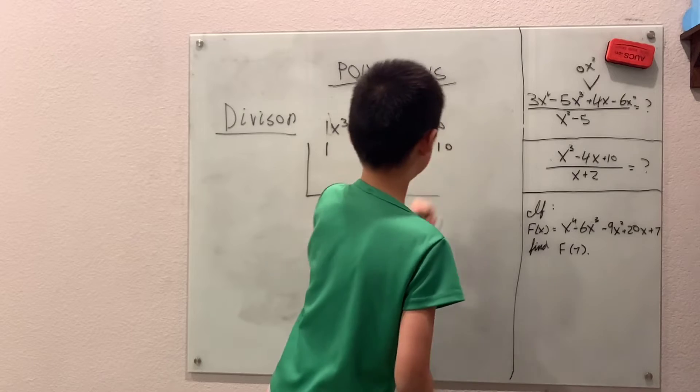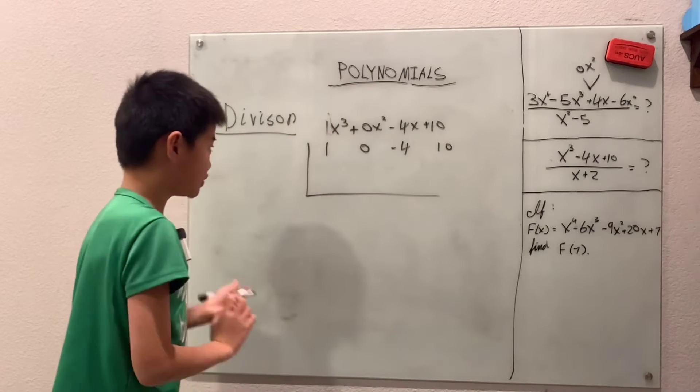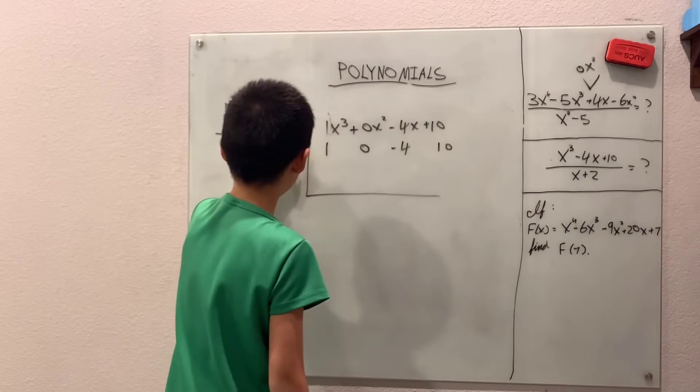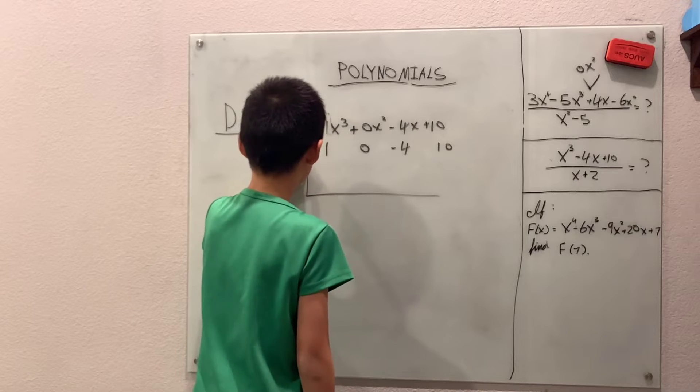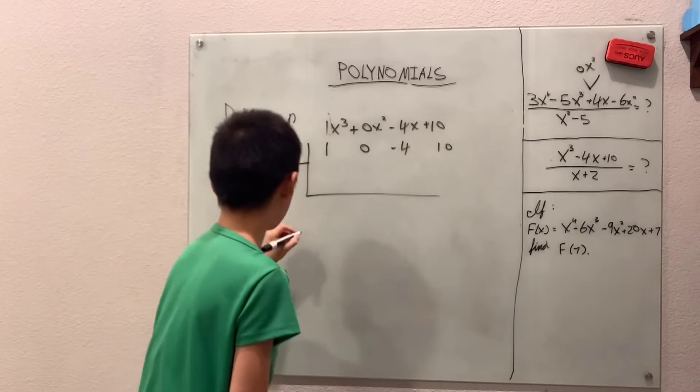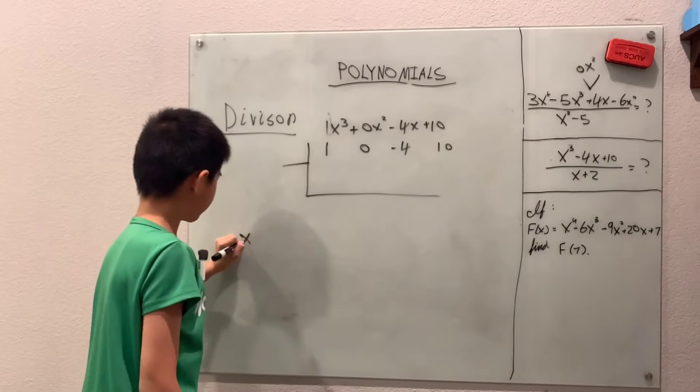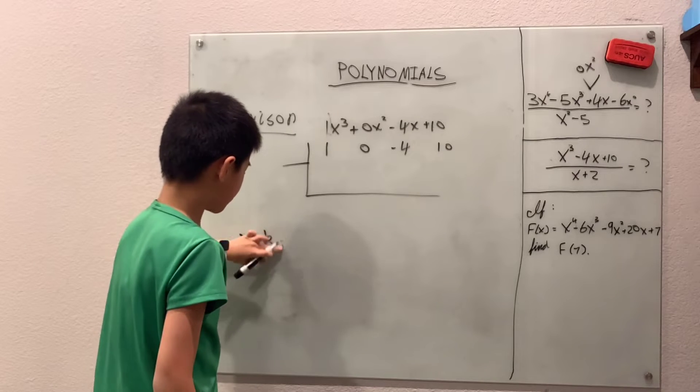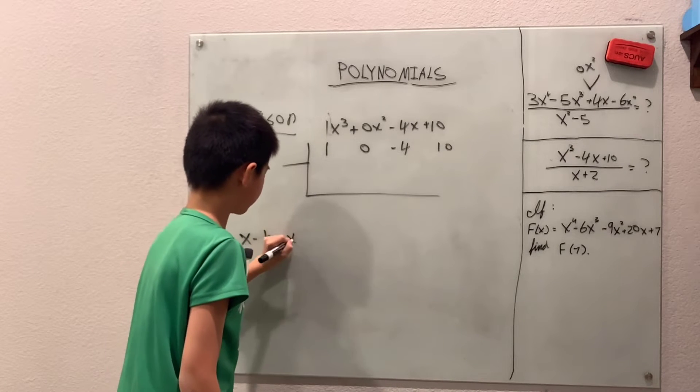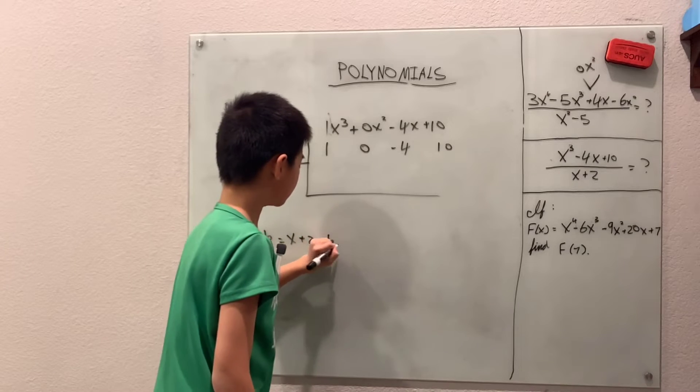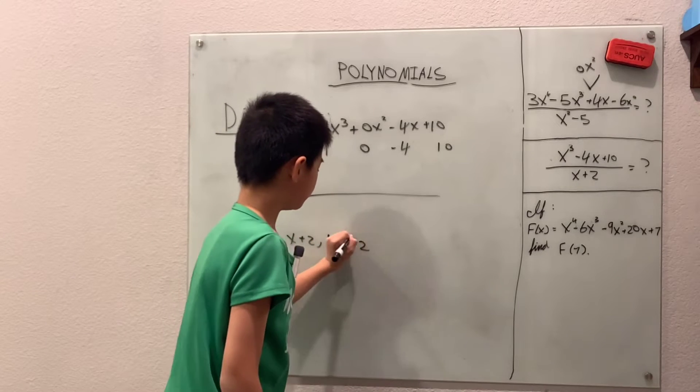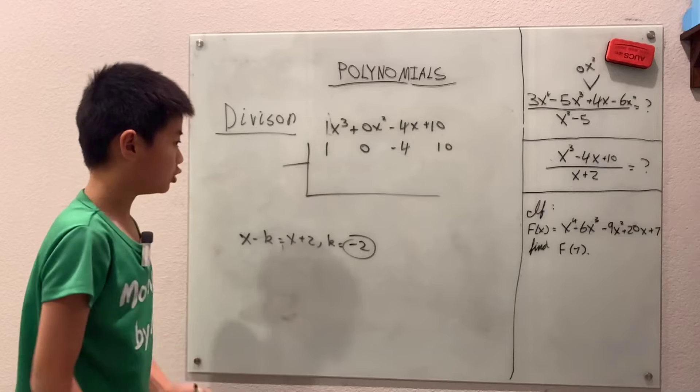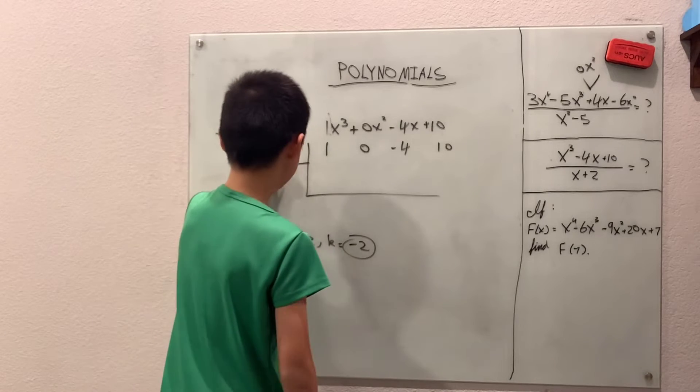Just matching up all the coefficients, right? And our d(x), or our divisor, because this has to be an x minus k. Well, if x minus k is going to be equal to our x plus 2, the k is equal to negative 2. Very important, it's negative 2, so we put negative 2 here.